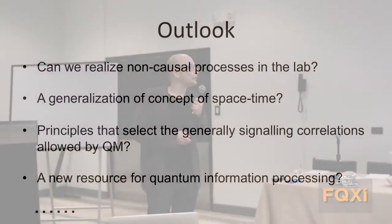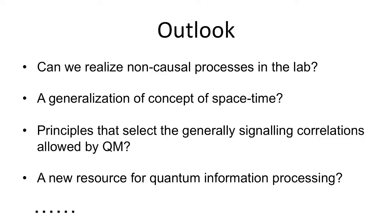There are many open questions. The most burning one is: can we realize non-causal processes in the lab? Does this imply the generalization of the concept of space-time? Because if you have a space-time, you have a definite causal order. Are there principles that can select actually what kind of correlations are possible in this framework? Why is there this Tsirelson bound? Why can't we go beyond that? Can we use it as a new resource for quantum information processing? We see that there is at least one game you can win with that as compared with the definite causal order correlations. Thank you very much for your attention.